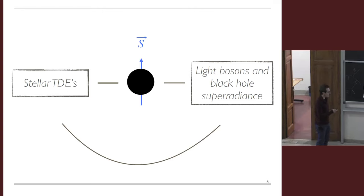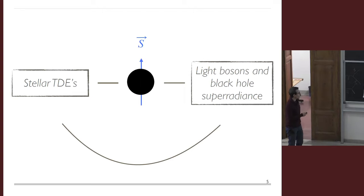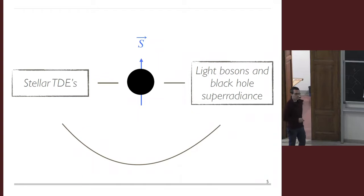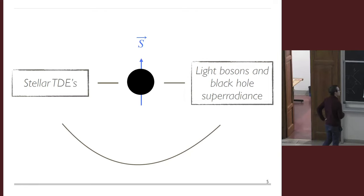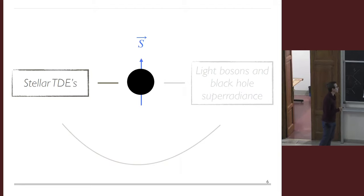By exploiting this connection we can try to discover or set limits on these particles. To make this quantitative I'll need to tell you more details about what stellar TDEs are, review the process of black hole super-radiance, and once we do that we'll be able to draw this connection and see what we can do with these events. So let's start with the basics of stellar TDEs.